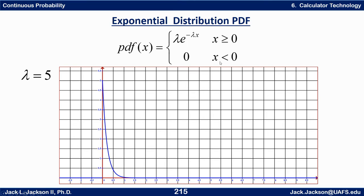The exponential PDF is defined as lambda·e^(−λx) for x ≥ 0, and zero for x < 0. When x equals 0, the y-intercept is lambda — so with lambda equals 0.5, it starts at 0.5 and comes down. That's an exponential decay function. You should have seen those in algebra. The total area under this graph between the curve and the x-axis is 1, even though the region goes on forever, because the tail gets smaller and smaller.